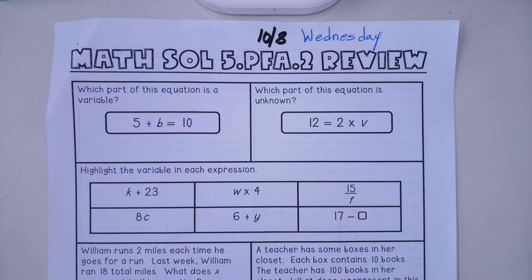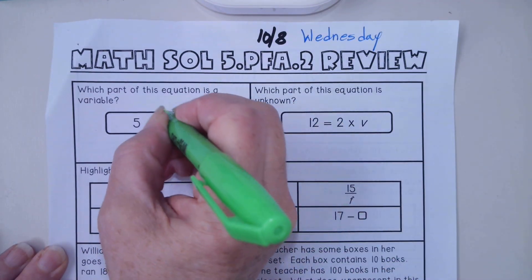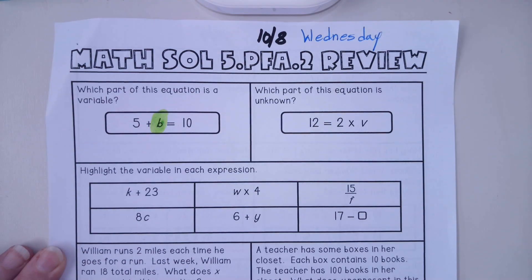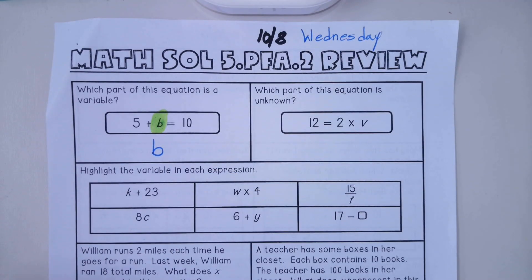All right, let's go into our first question. It says which part of this expression is a variable? In question one it would be our b. B is our variable, we don't know what that number is.